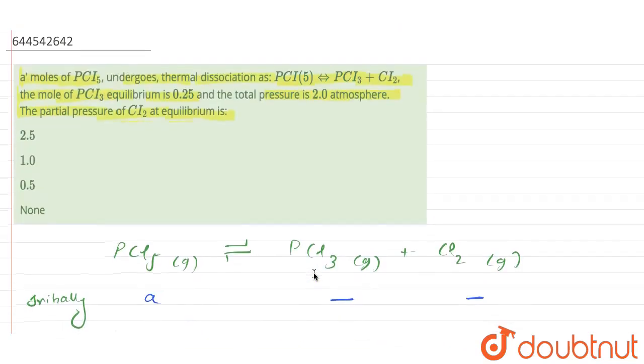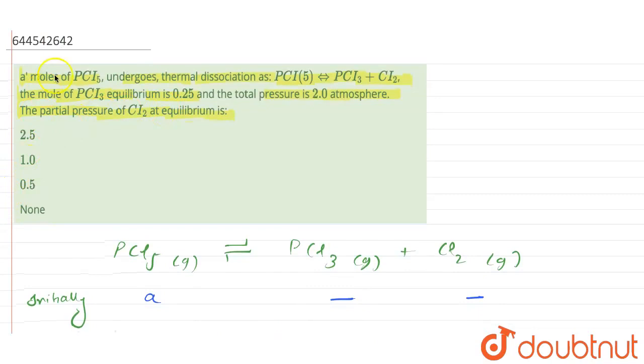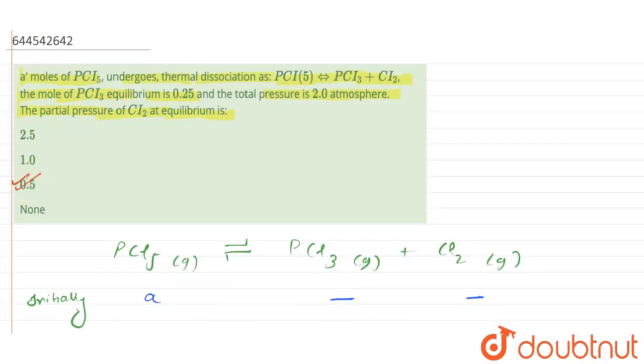So this was asked and let's see if the option is there or not. If you consider option number C, you have 0.5 atmosphere as the option. So this will be the correct answer. Thank you.